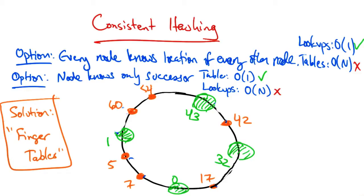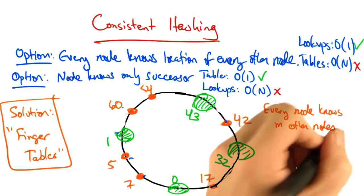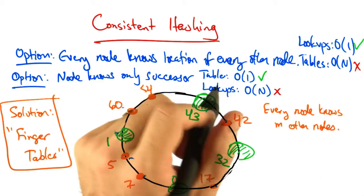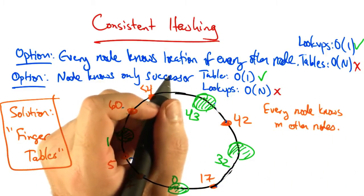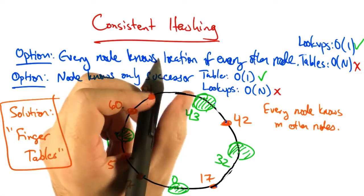A solution that provides the best of both worlds is called finger tables, where every node knows m other nodes in the ring. And the distance of the nodes that it knows increases exponentially.